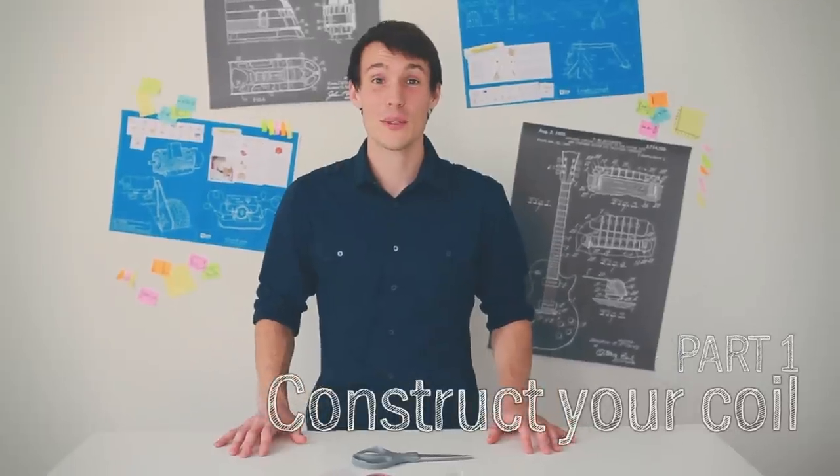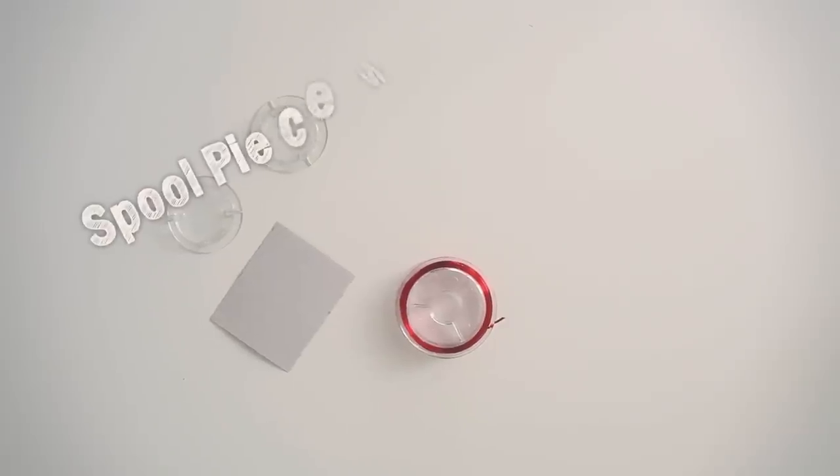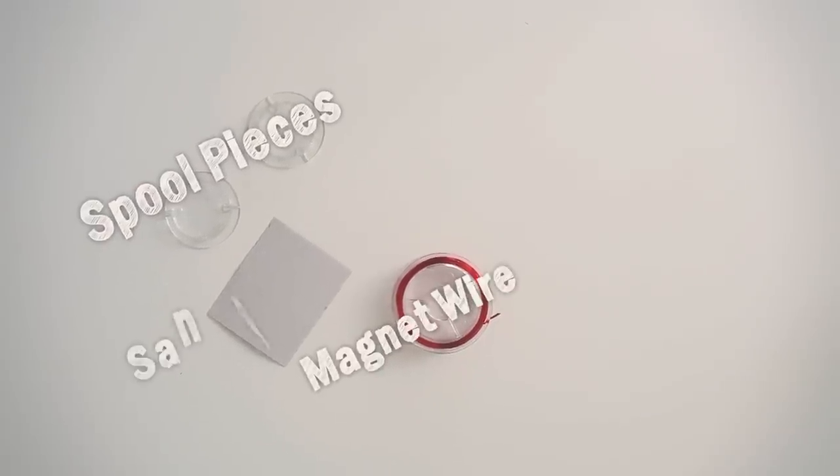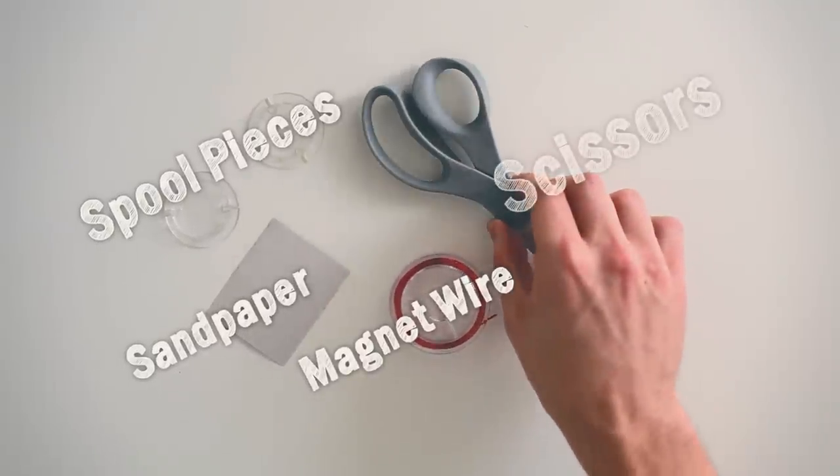The first thing we're going to do is make the coil for our motor. For this you'll need your two clear spool pieces, your coil magnet wire, sandpaper, and your scissors.